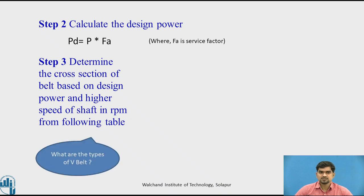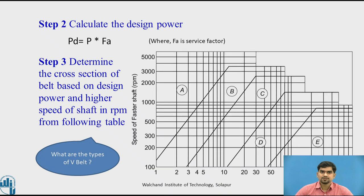There are generally 5 types of V-belts available: A, B, C, D, and E. The Z type is also available, based on the cross-section of the belt. From the manufacturing table, we can find out the appropriate cross-section. The table lists belt cross-sections A, B, C, D, and E, and the task is to find the appropriate type for our application.